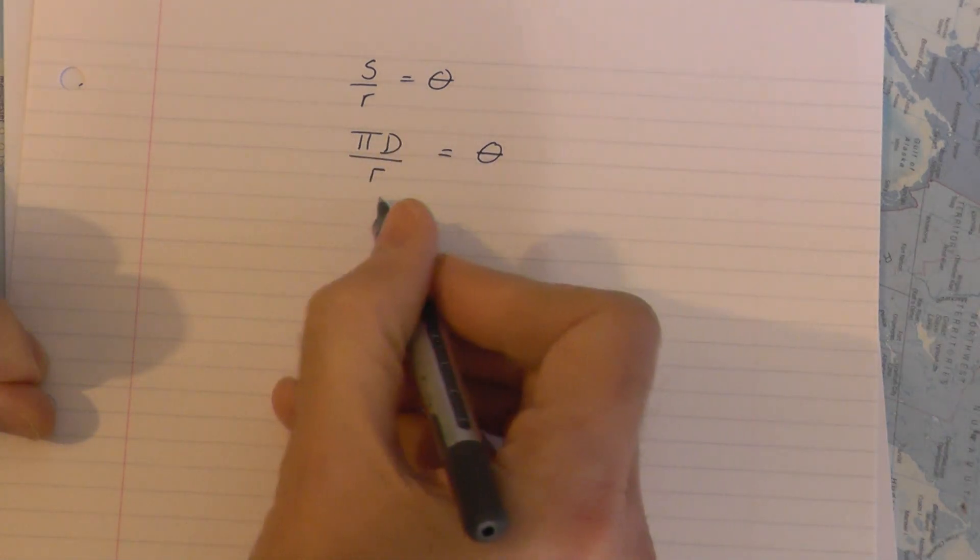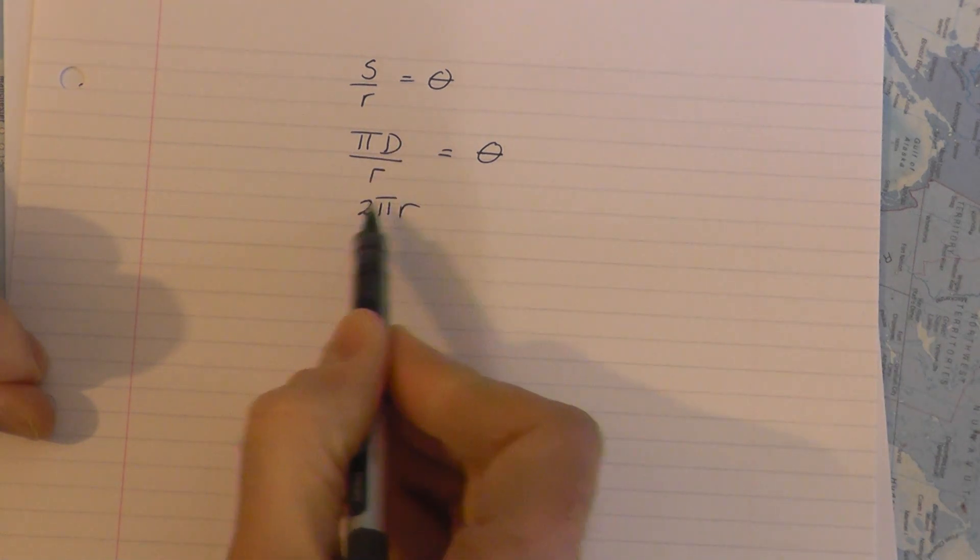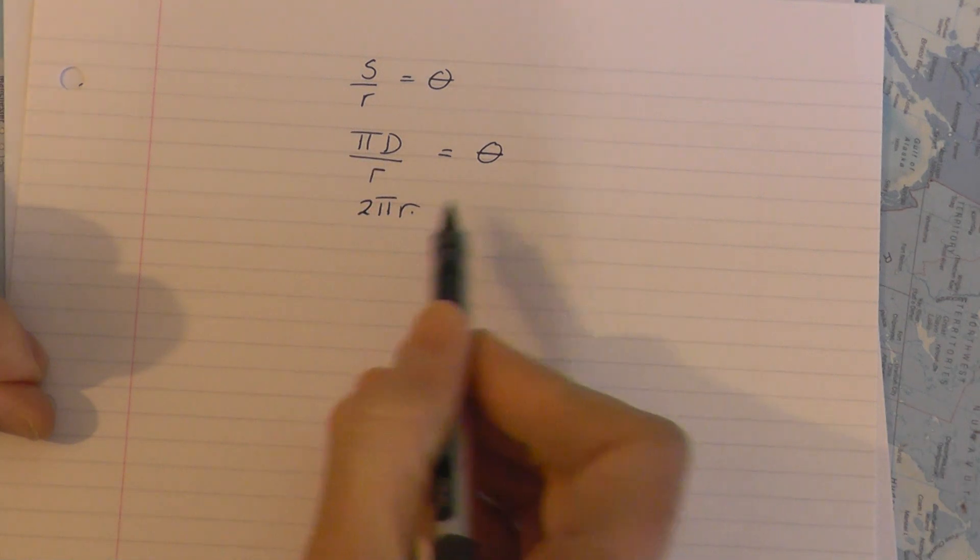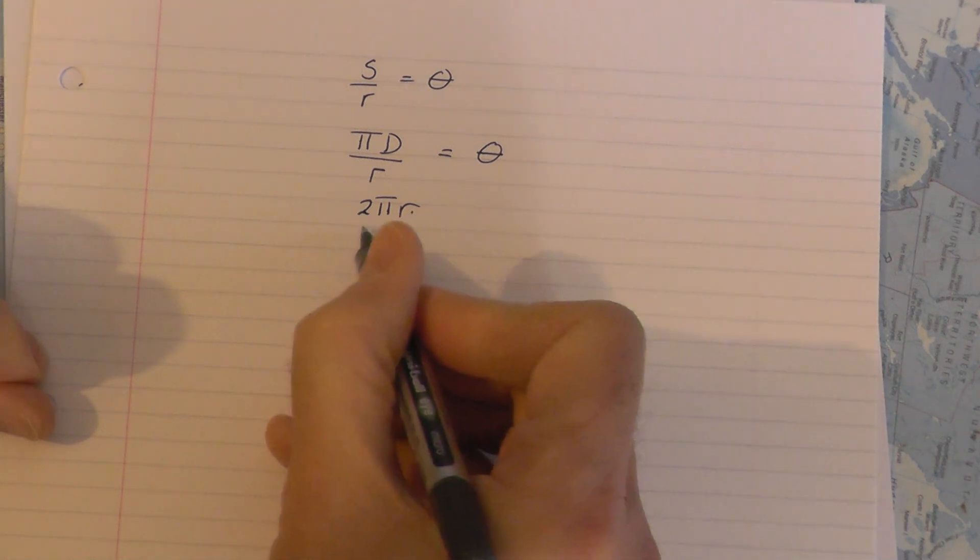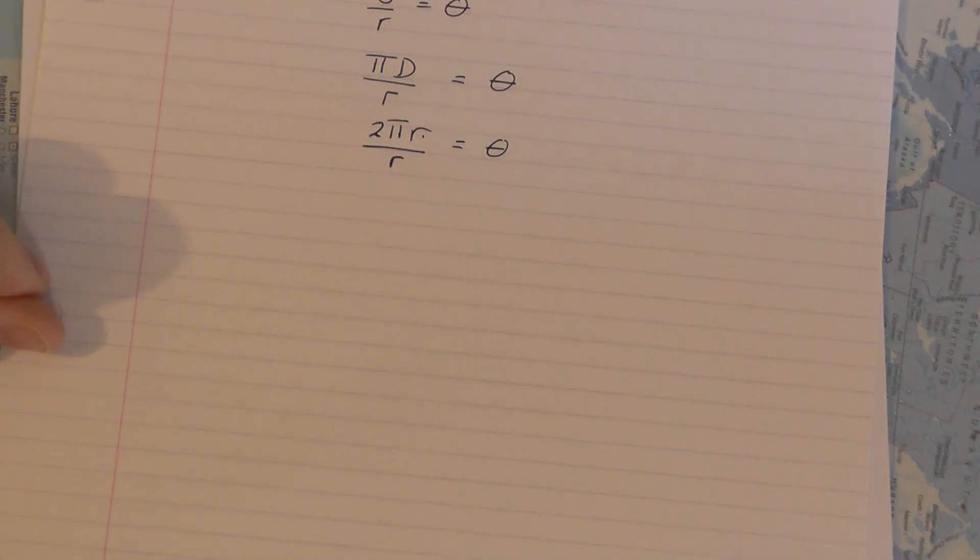You should know that π D is equivalent to 2π R because the diameter is the same as 2 times the radius of a circle. So I'm comparing the arc length of a full circle which is 2π R compared to its radius and that will give you the angle as measured in radians for a full circle.